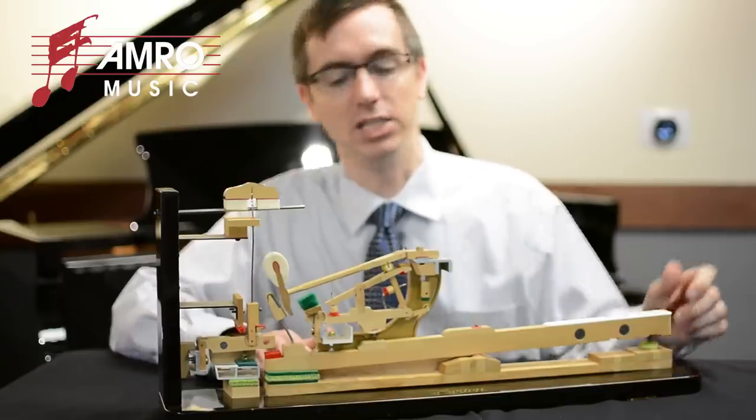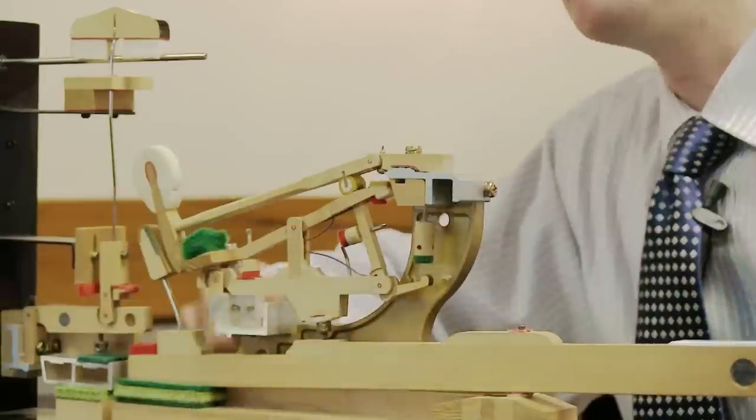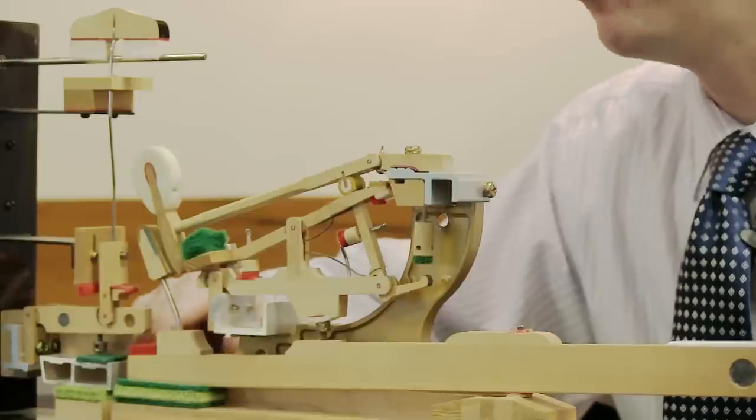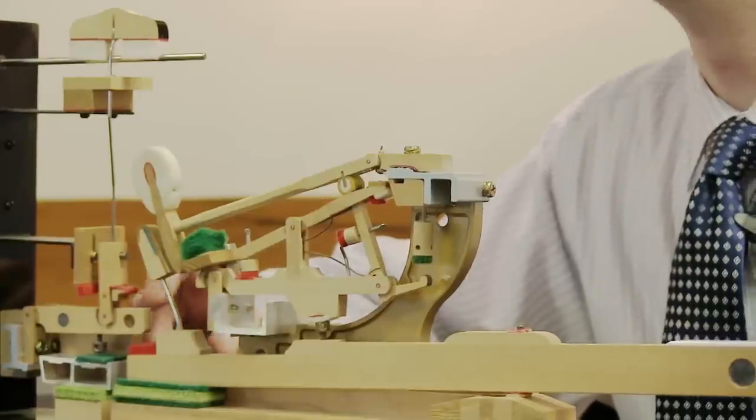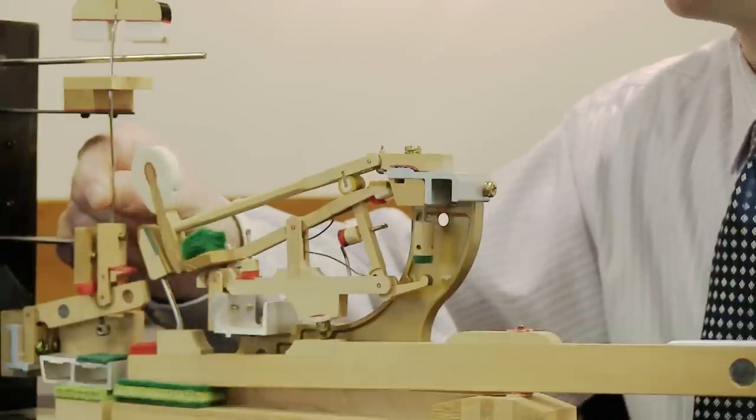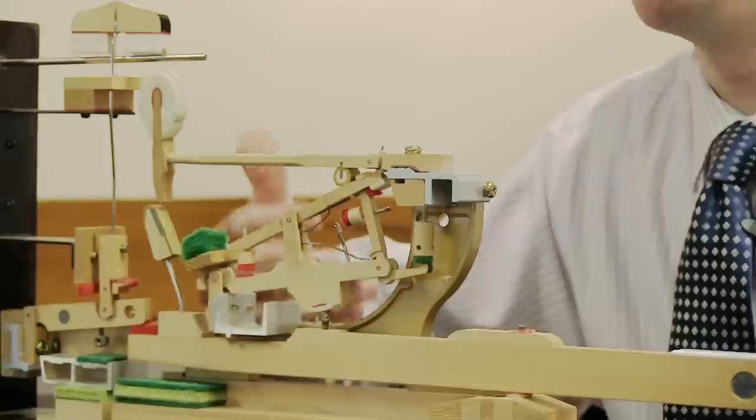A couple more components of the action, let's look down here at the end of the key. We have the back check and we have the under lever. The end of the key arm is going to make contact with the under lever at a certain point and that's going to raise the hammer. Let's see how that works.